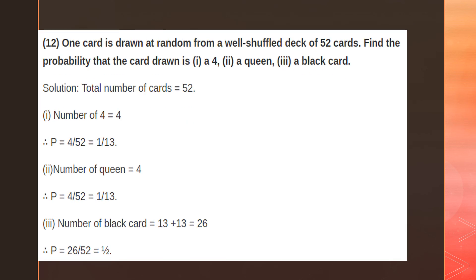One card is drawn at random from a well-shuffled deck of 52 cards. Find the probability that the card drawn is a number 4, a queen, and a black card. There are 4 cards numbered 4 in a deck, so the probability of getting a number 4 is 4 by 52. There are 4 queens in a deck, so the probability of getting a queen is 4 by 52. A deck has 26 black cards and 26 red cards, so the probability of getting a black card is 26 by 52, which equals 1 by 2.